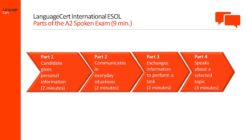The fourth part of the spoken exam aims at assessing the candidate's ability to speak at greater length with minimal participation by the interlocutor. The candidate is given a topic, asked to prepare a response in half a minute, and then talk about it for 1 minute. Then a few related follow-up questions conclude the exam. The duration of Part 4 is 3 minutes.